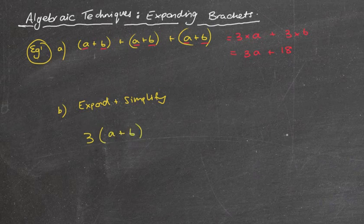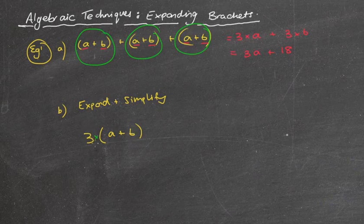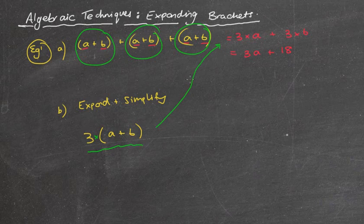Now that's actually the exact same question, because think about it, how many of these a plus 6's do I have? I've got 3 lots of them. I've got 3 lots of these things here. Now, if we look at the way they ask this question, and I guess that working out, because the working out is exactly the same.